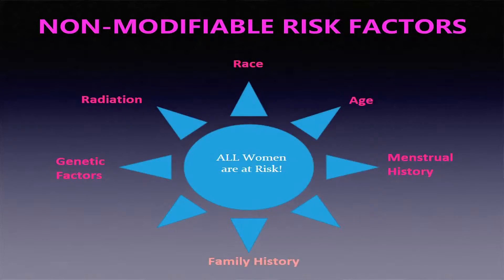The next non-modifiable factor is menstrual history. If a woman has started her menses at a very young age, say around nine years of age, and continues to have her menses until a very late age of 50 to 55, she has a large fertility period. These women are more prone to developing breast cancer.